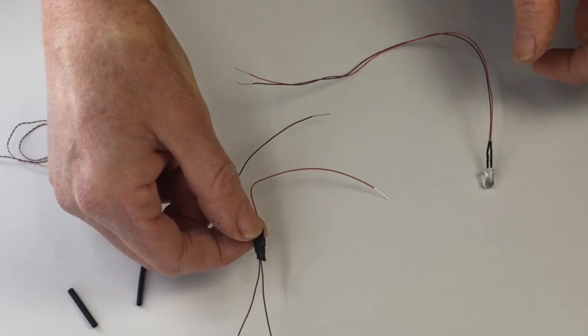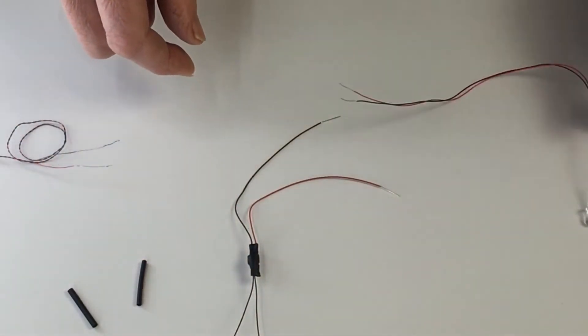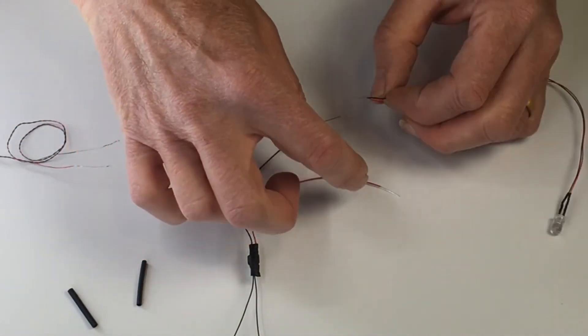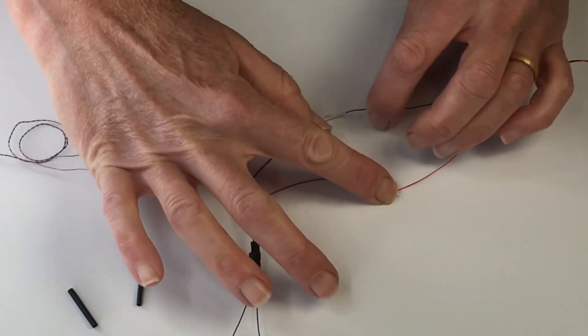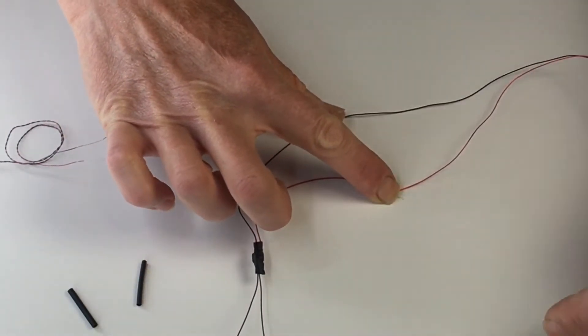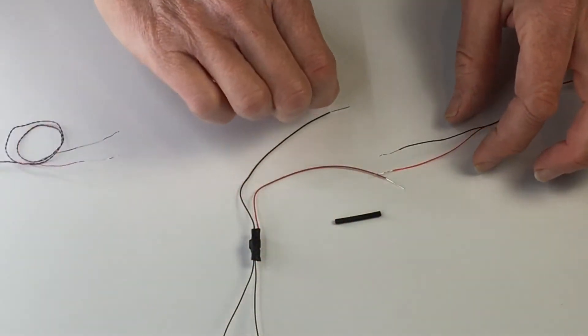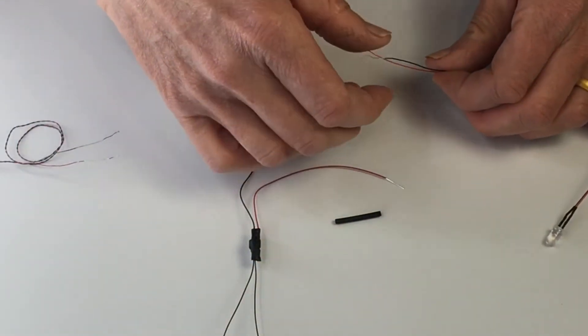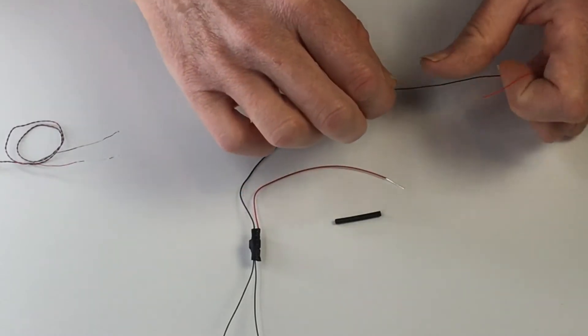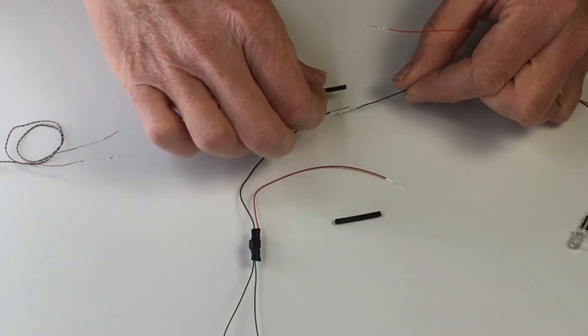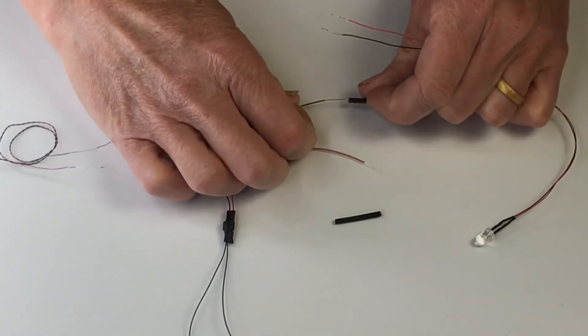When you finish getting the LED where you want it, you can attach the red wire to the red wire and the black wire to the black wire, and then attach to power. We also give you shrink tube. It's a good idea to shrink tube your connections to make them more solid and protect them from shorting. You'd want to put this on before you start.